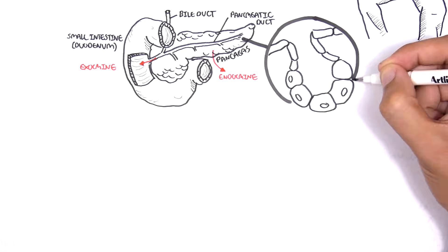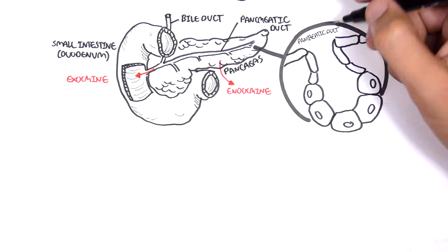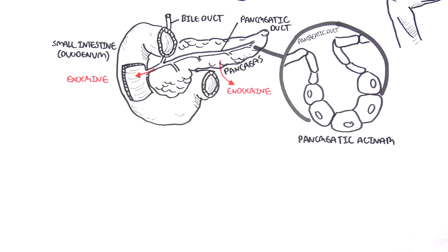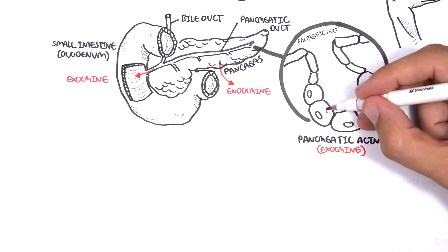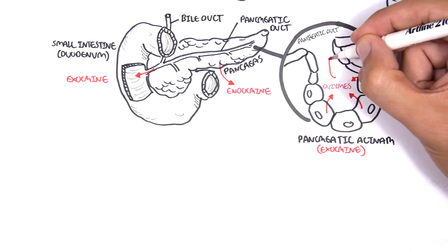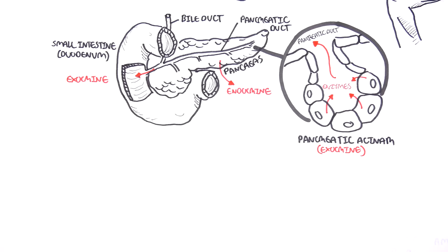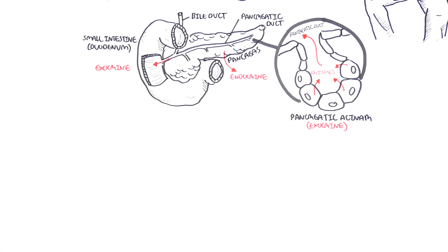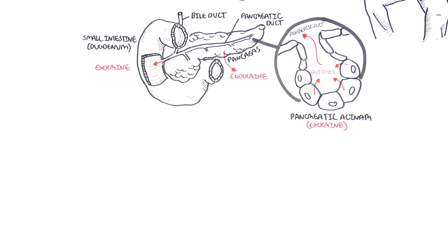The normal pancreas have a cluster of cells called the pancreatic acina. These work as the exocrine glands. Here are cells that produce the digestive enzymes which then travel through the pancreatic duct into the small intestine.